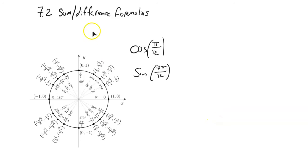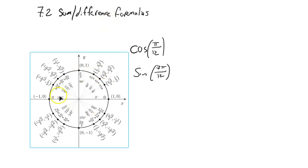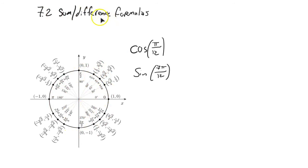It's Math 142. We're going to start digging into some of these tools that we can use to relate different angles to each other. The first ones we're going to look at are called the sum and difference formulas. These formulas help us get at exact values of things and show us relationships.